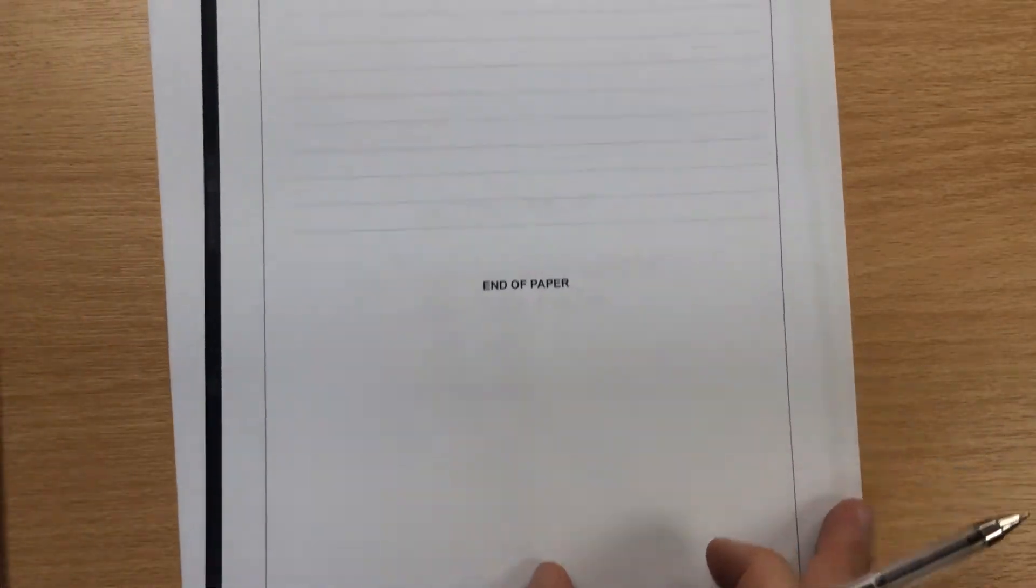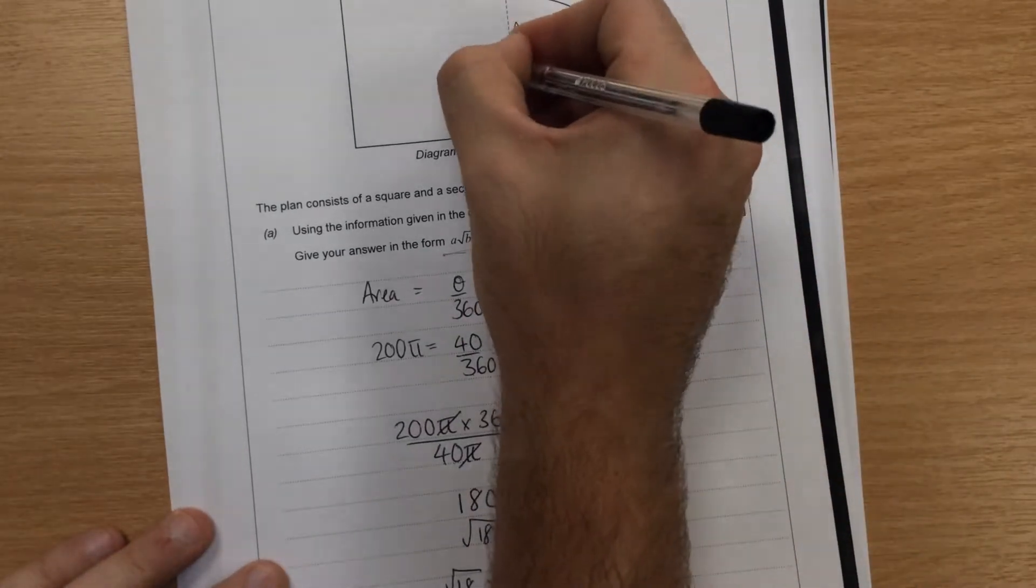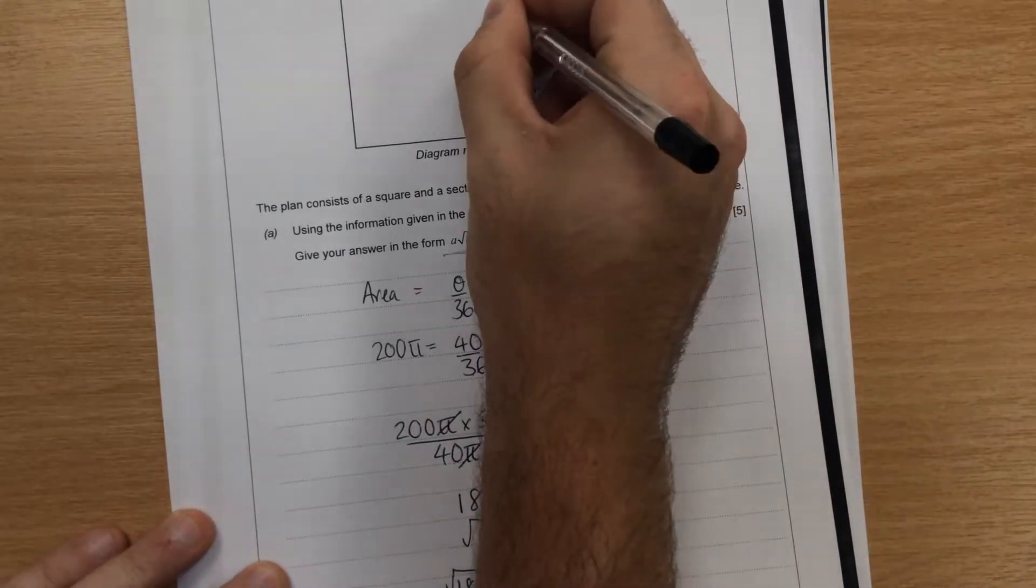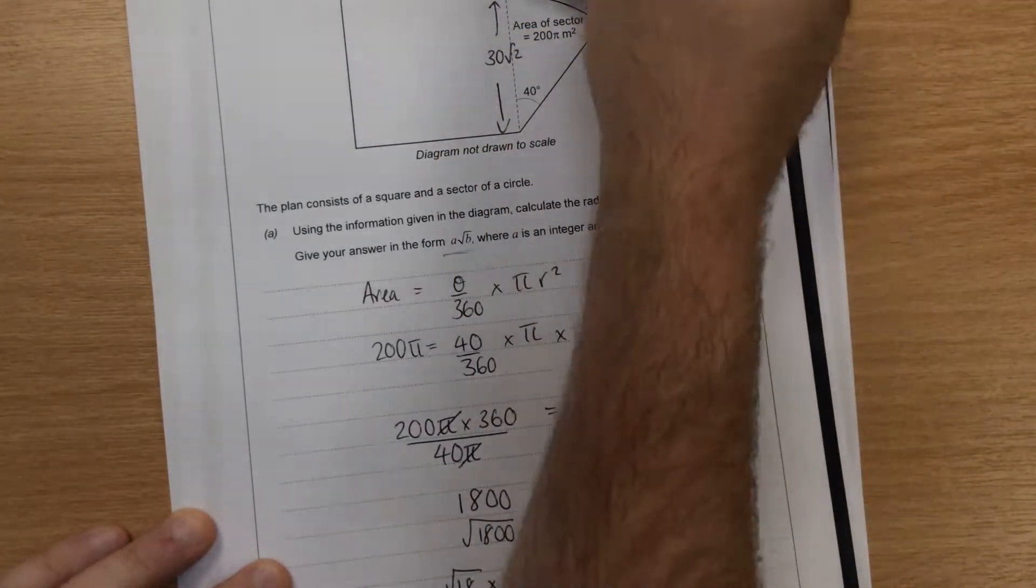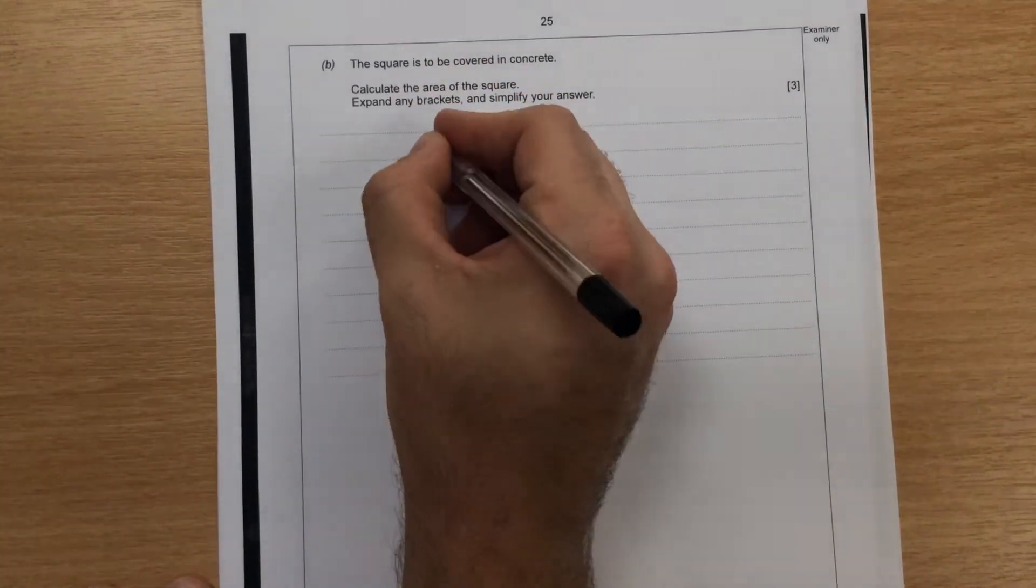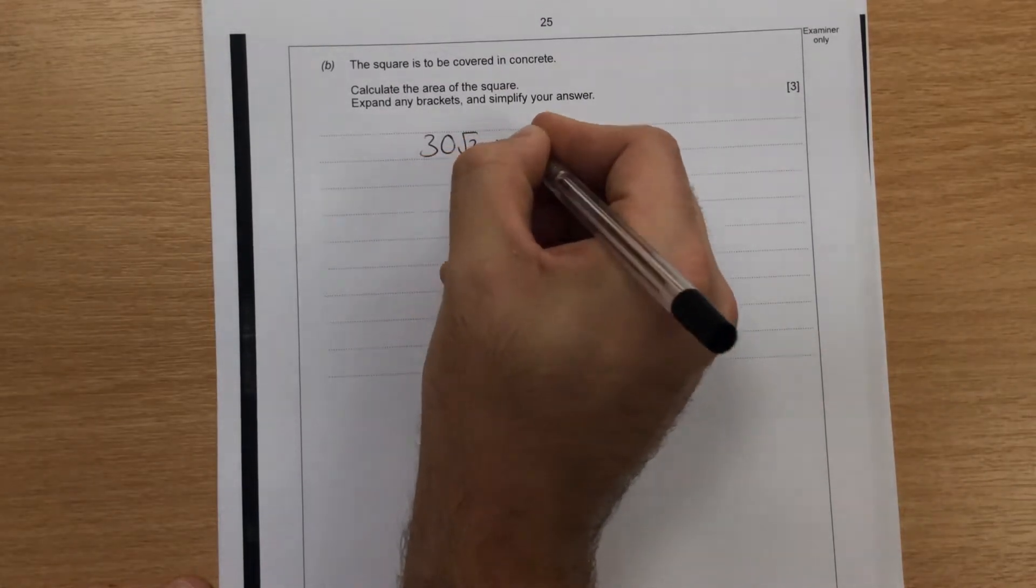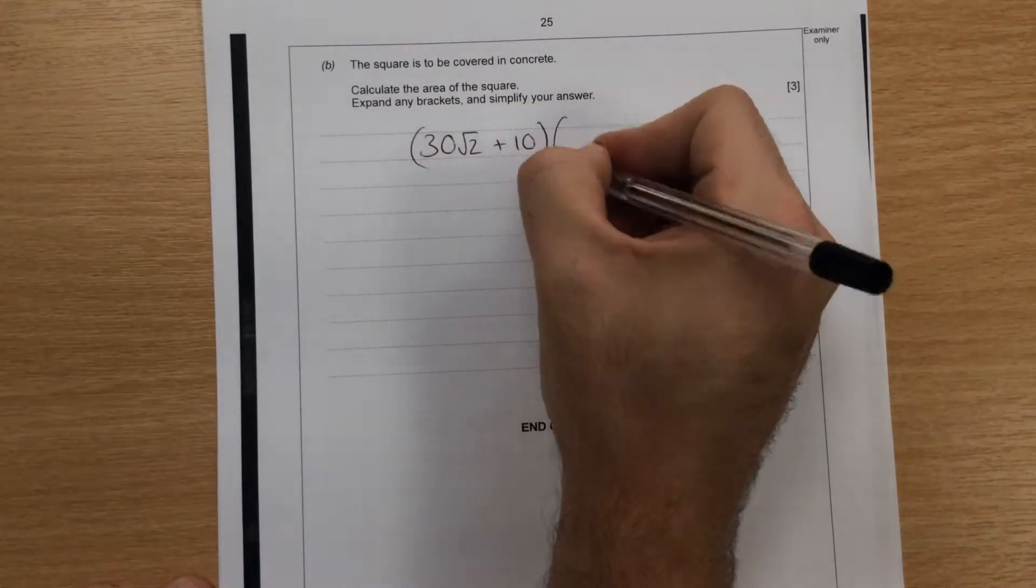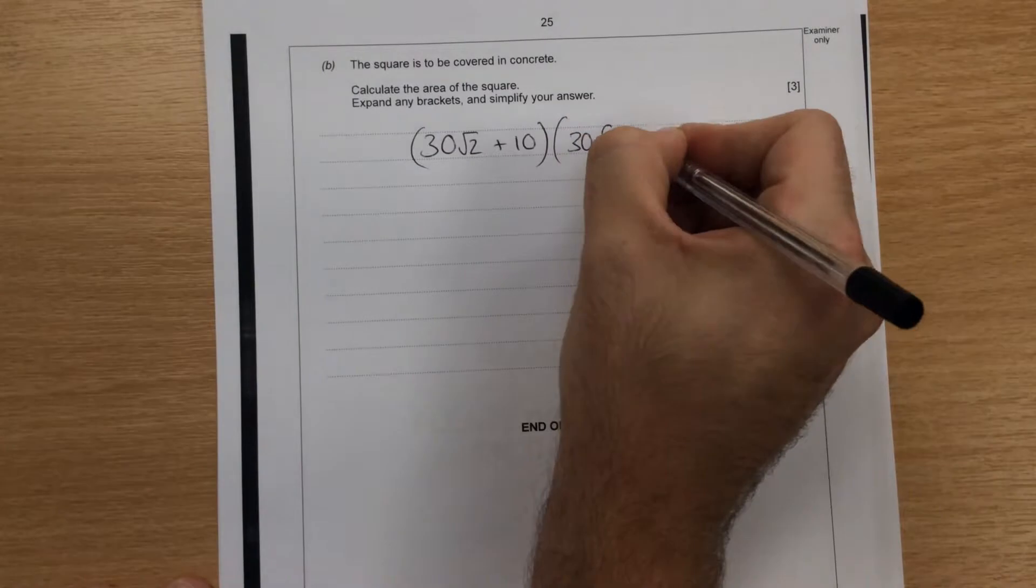The square is to be covered in concrete. Calculate the area of the square. So if we look at the diagram, we know now that this length here is 30 root 2 from there to there. So the length of the square is 30 root 2 plus 10. So the length and width of the square are 30 root 2 plus 10. And we're going to times that by itself, 30 root 2 plus 10.